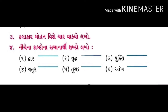પ્રશ્ન ચાર: નીચેના શબ્દોના સમાનાર્થી શબ્દો લખો. નંબર એક: ડ્હાર — ડ્હાર એટલે દરવાજું. નંબર બે: વૃત્ત — વૃત્ત એટલે ગ્રૃહ/ઘર. નંબર ત્રણ: યુક્તિ — યુક્તિ એટલે તરકીબ. નંબર ચાર: ચતુર. નંબર પાંચ: તૂચ. નંબર છ: આક્ષ.